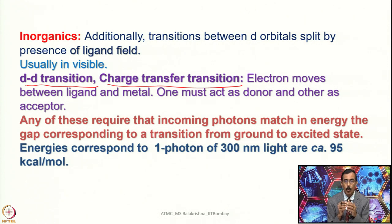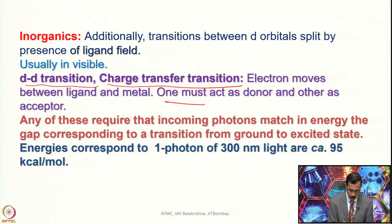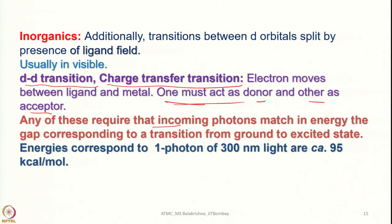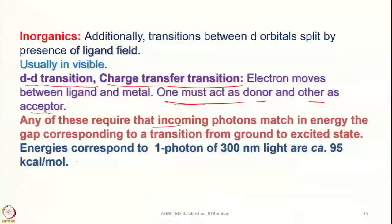In some cases ligand-to-ligand transitions can also be anticipated. For charge transfer transitions, one species must act as a donor and the other as an acceptor. Any of these transitions require that incoming photons match in energy the gap between the ground state and the excited state. For example, a transition between HOMO and LUMO — or any two energy levels — requires energy equal to the energy difference between those levels. This corresponds to one photon of approximately 300 nm light, or roughly 95 kcal/mol.